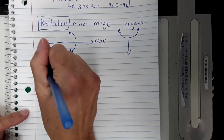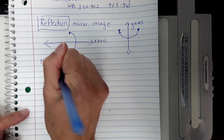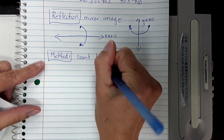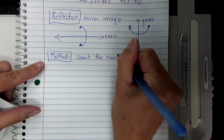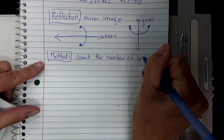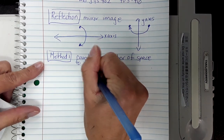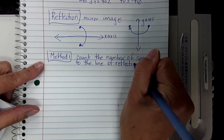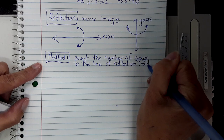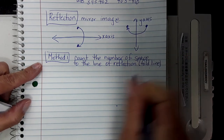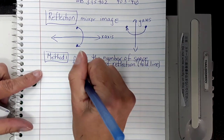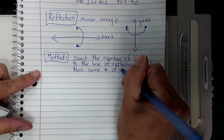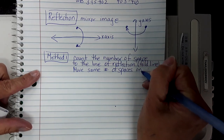There are two methods. Method one is the easy one. What you're going to do is you're going to count the number of spaces to the line of reflection. The line of reflection is your fold line. And what you're going to do is move that same number of spaces on the other side.